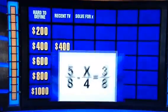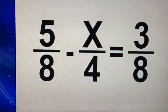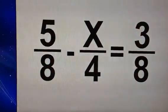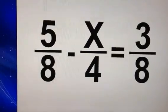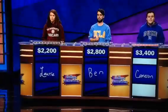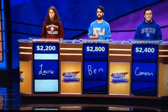Solve for x for 1,000. 5 eighths minus x over 4 equals 3 eighths. Cameron. What is x equals 8? No. Lori. What is x equals 1? 1. That's it. Recent TV.